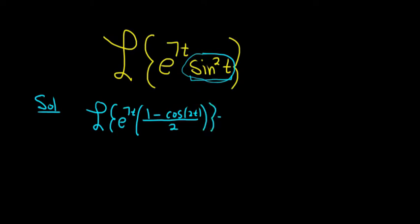We can break this up. This is equal to the Laplace, and I'll show an extra step. This is e to the 7t. It's 1 over 2, so 1 half, minus, and then cosine 2t, all over 2.